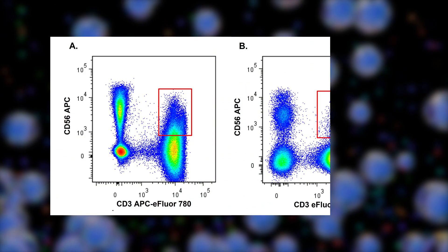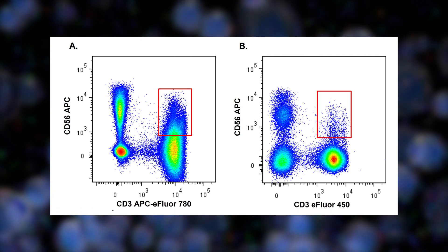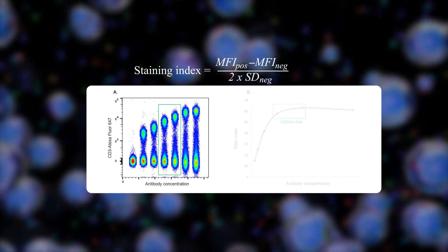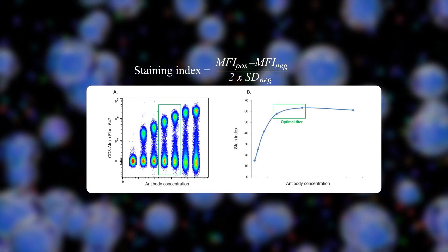Incorrect antibody concentrations can increase spread, decrease resolution and lead to non-specific binding. Hence, antibody titration is key to the success of a spectral flow cytometry experiment.